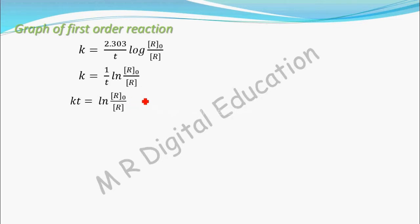I will also show graph for this one, and one more thing we can do. Let's see that one. Just rearrange: ln [R]0 by [R] equals kt.